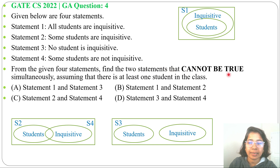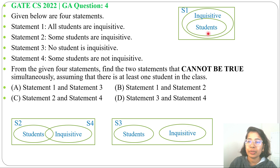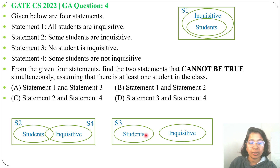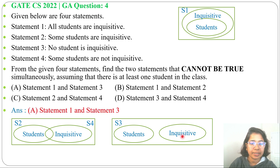The question asks: find the two statements that cannot be true simultaneously. Statements 1 and 3 cannot be true simultaneously — both are opposites. In statement 1, students are a subset of inquisitive; in statement 3, student and inquisitive sets are completely separate with no overlap. So the answer is option A: statement 1 and statement 3.